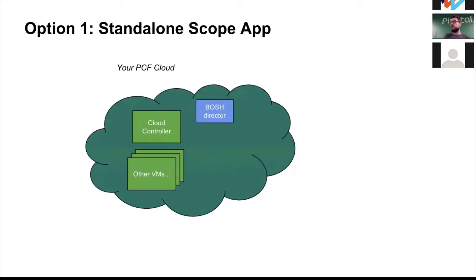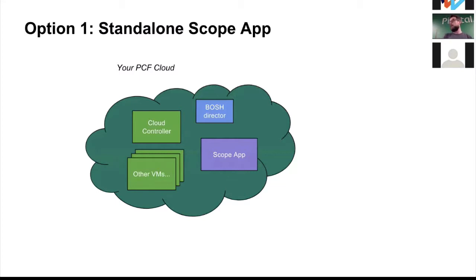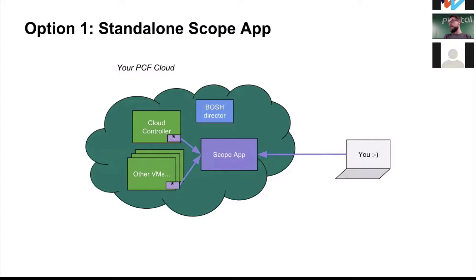You can expect 20 to 30 VMs out of the box for a not-so-big environment. When you install the Weaveworks tile and configure standalone mode, you get one or multiple VMs of the Scope app — the web app that shows you the graph. The tile then co-locates agents onto the Cloud Foundry VMs using BOSH runtime config, so they send reports to the Scope app. Once that's done, you go to the Scope app and see your Cloud Foundry deployment.